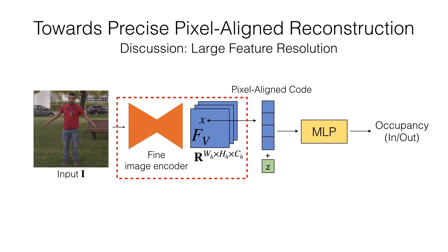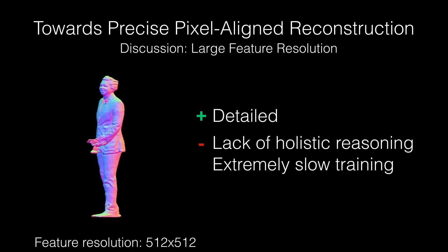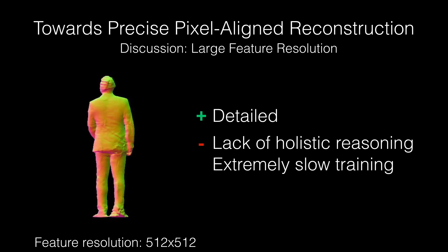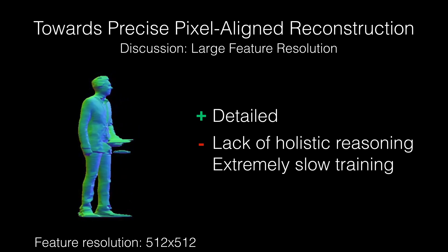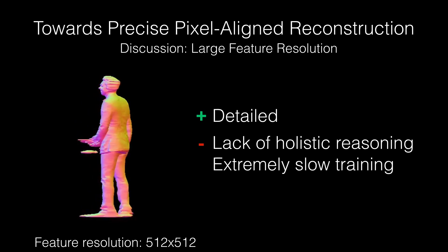What about utilizing a shallow but high-resolution image encoder? Although the result becomes sharper and more detailed, the reconstruction is prone to artifacts due to the lack of global information.